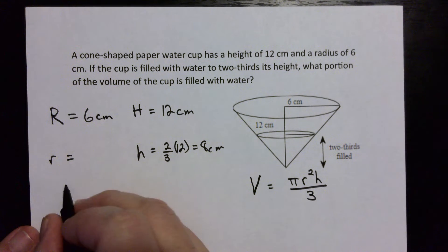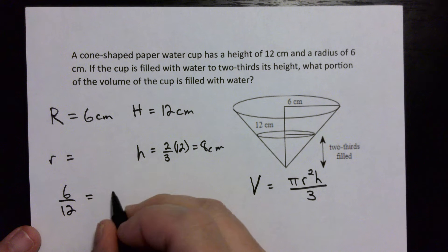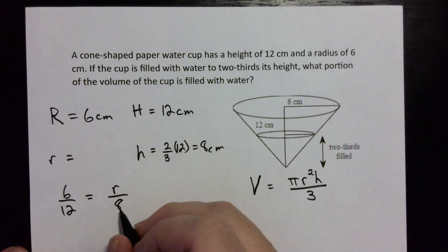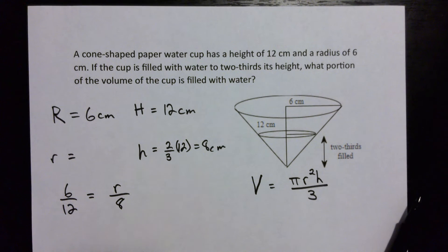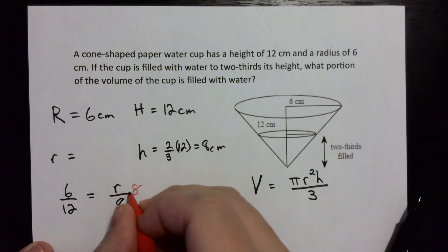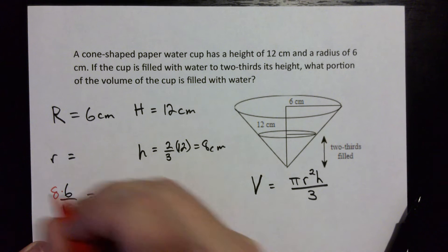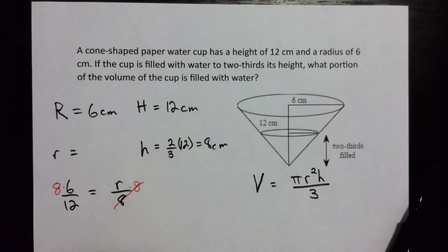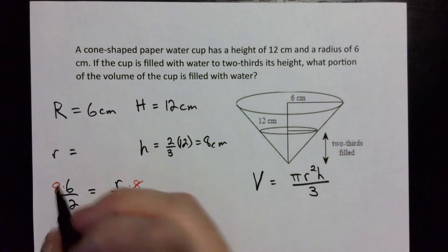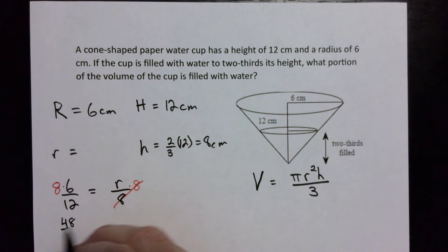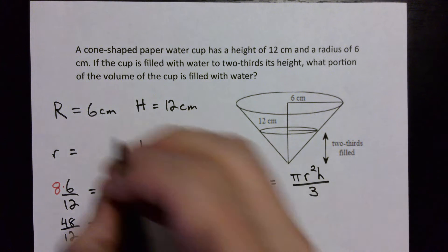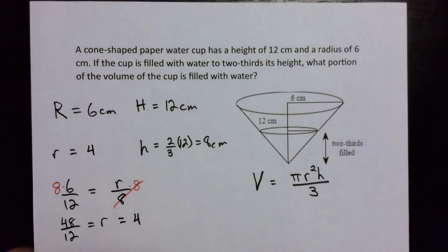So we get 6 over 12 is equal to r over 8. Okay, and if I multiply the 8 to the other side, times 8 and times 8, this 8 here will cancel and then we get 48 over 12 equals r, which equals 4. So r little r is equal to 4.